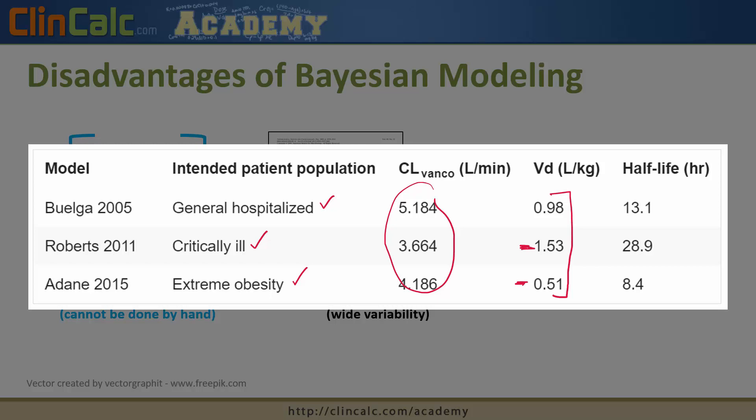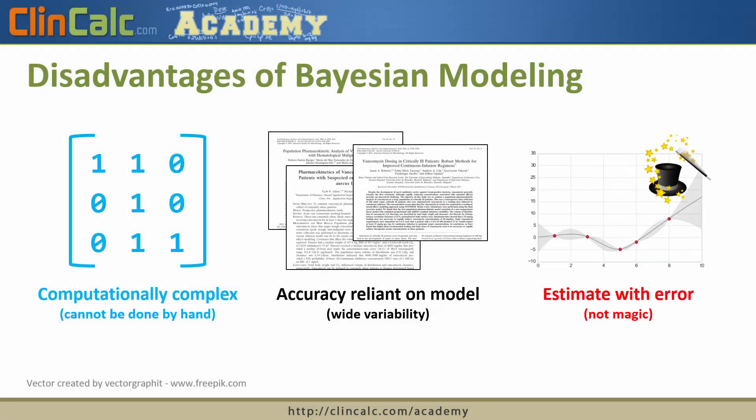There is no perfect single model for Bayesian modeling. This is still an estimate — because we're only obtaining one vancomycin level, there is some degree of error and variability we cannot account for. In truth, for the most accurate representation of a patient's pharmacokinetic parameters, we need a two-drug level approach, the Sawchuk-Zaske method, which is much more accurate. Sometimes people think this computationally complex approach is magical, but it is still an estimate with variability and error associated with it.